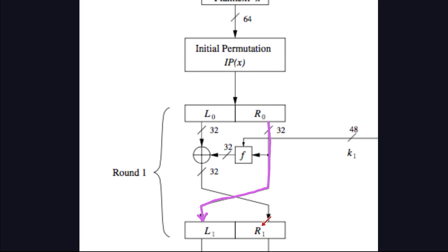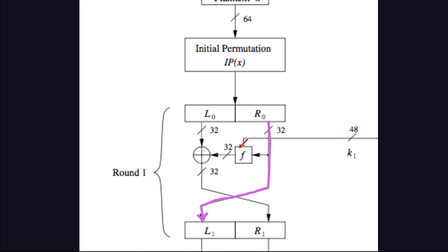The F function is the one that encrypts — it processes R1. The F function handles all the confusion and diffusion. It has two inputs: R0, the right-hand side, and a 48-bit sub-key K1. The inner structure of the F function we will see later. Basically, it takes those two inputs R0 and K1 and transforms them into a 32-bit block. That 32-bit block is then XORed bitwise with L0 — the left-hand side — producing a 32-bit result, which comes out as R1.